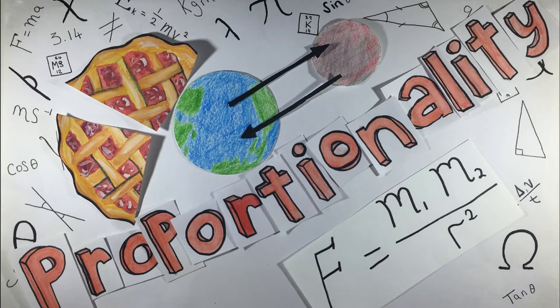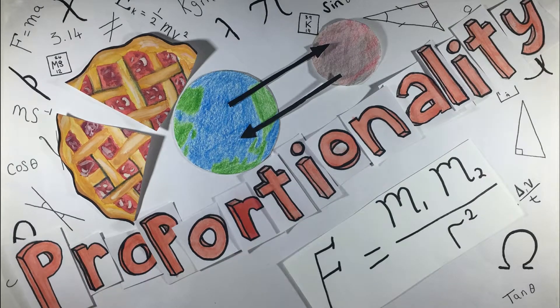This is the first half of the proportionality videos where we'll cover direct proportionality. Proportionality shows how two variables relate to each other. In the case of direct proportionality, as one variable increases, so does the other.